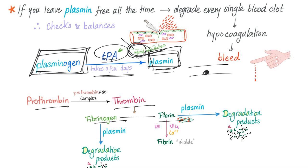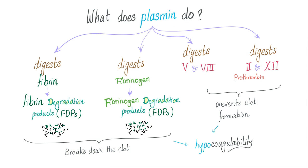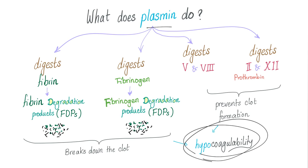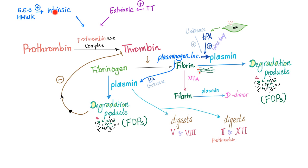Here's the story: prothrombin → thrombin → fibrinogen → fibrin. Plasmin degrades fibrin to fibrin degradation products, stabilized fibrin into D-dimer, and fibrinogen into fibrinogen degradation products. What does plasmin do? It digests fibrin into fibrin degradation products, fibrinogen into fibrinogen degradation products, and it digests factors 5, 8, prothrombin, and 12. All of this can be summarized in one word: plasmin leads to hypocoagulability. Repetition is the mother of pedagogy.